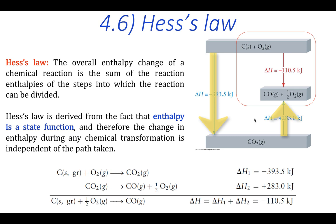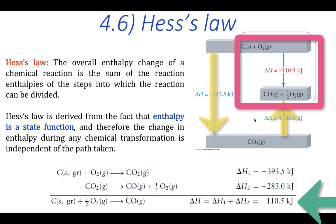Then we just add these two values together to get the enthalpy change for the reaction of interest, the conversion of graphite to carbon monoxide.